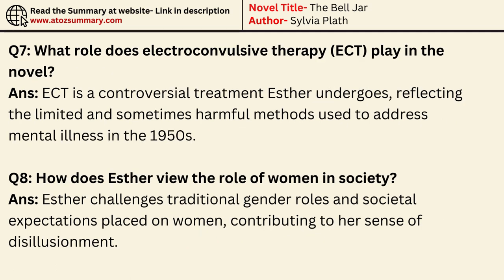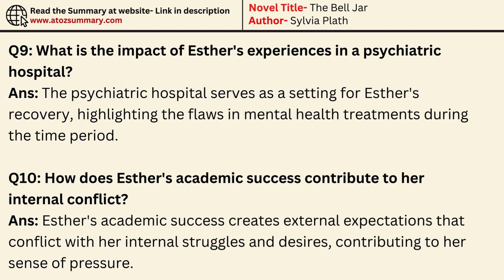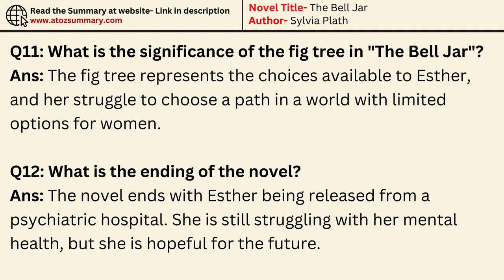What role does electroconvulsive therapy (ECT) play in the novel? ECT is a controversial treatment Esther undergoes, reflecting the limited and sometimes harmful methods used to address mental illness in the 1950s. How does Esther view the role of women in society? Esther challenges traditional gender roles and societal expectations placed on women, contributing to her sense of disillusionment. What is the impact of Esther's experiences in a psychiatric hospital? The psychiatric hospital serves as a setting for Esther's recovery, highlighting the flaws in mental health treatments during the time period. How does Esther's academic success contribute to her internal conflict? Esther's academic success creates external expectations that conflict with her internal struggles and desires, contributing to her sense of pressure. What is the significance of the fig tree in The Bell Jar? The fig tree represents the choices available to Esther and her struggle to choose a path in a world with limited options for women.